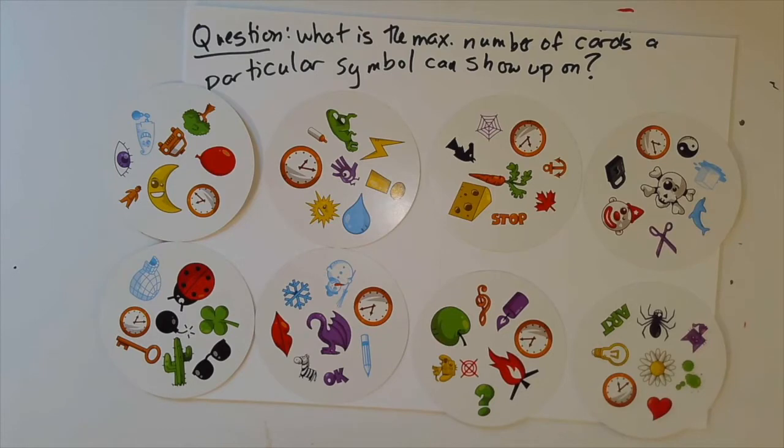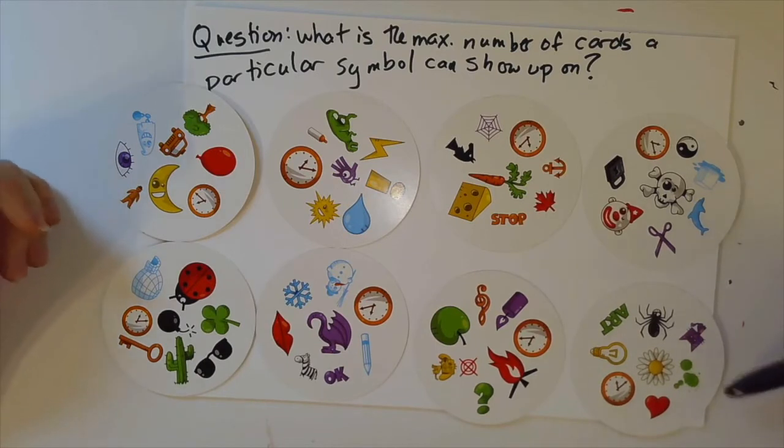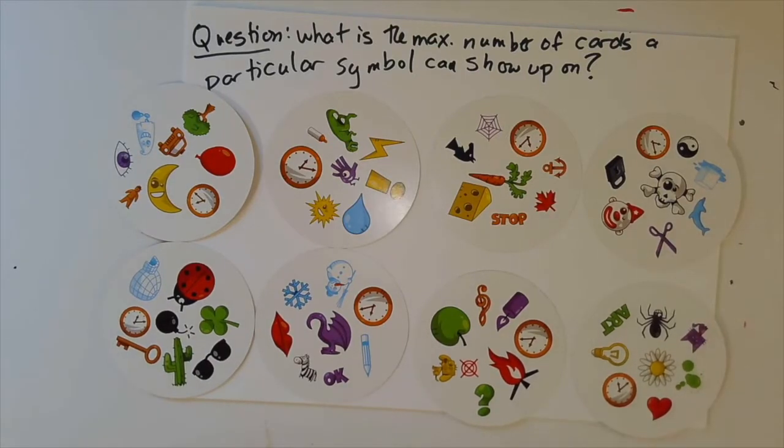Now, you could ask yourself, okay, well, there are eight that have the clock on them. Could I make a ninth card that has the clock on it? Maybe one that's not in the deck.